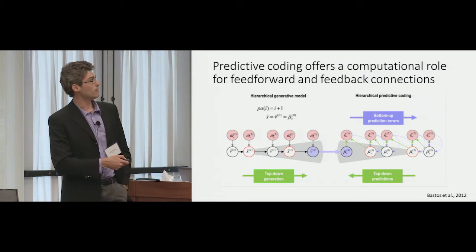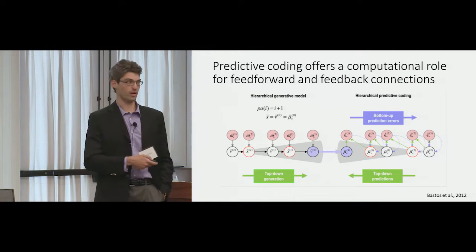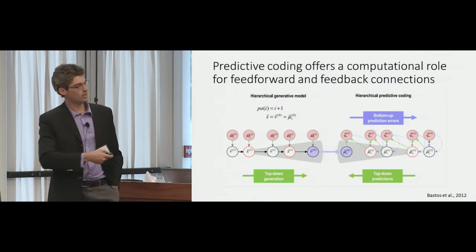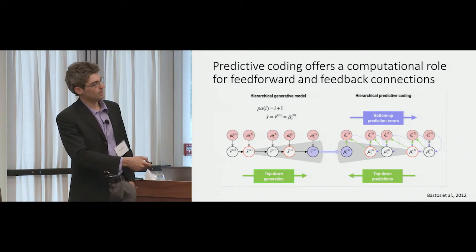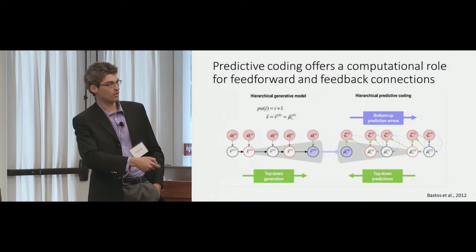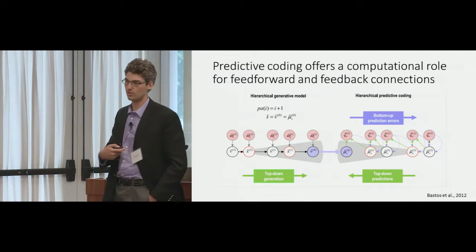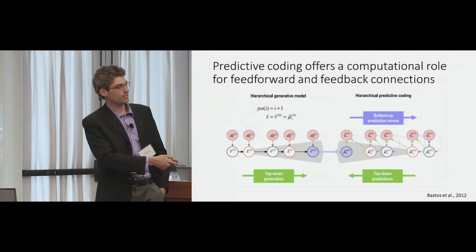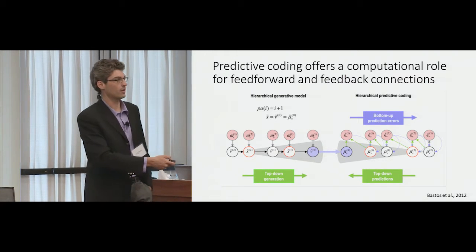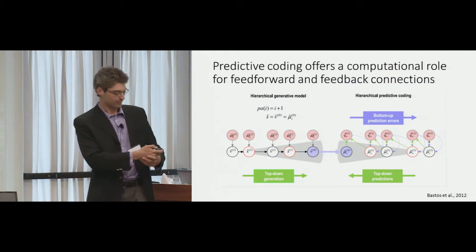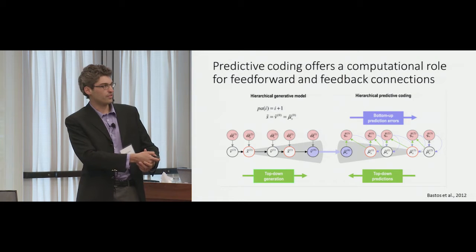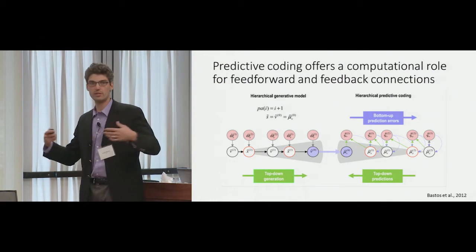Predictive coding offers a computational role for feedforward and feedback connections. Hidden causes and hidden states in the external environment interact to produce sensory causes which enter the brain. For each hidden cause of our sensory data, the predictive coding model proposes a different hierarchical level for unpacking those hidden causes and states, through interaction between prediction error units — which feed forward — and state or prediction units, which feed back in a highly recurrent and hierarchical way.